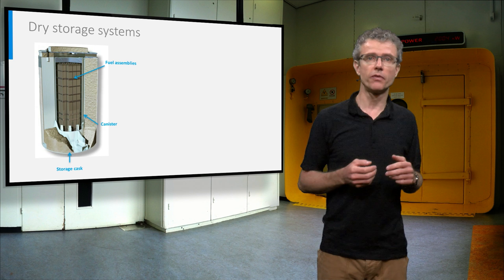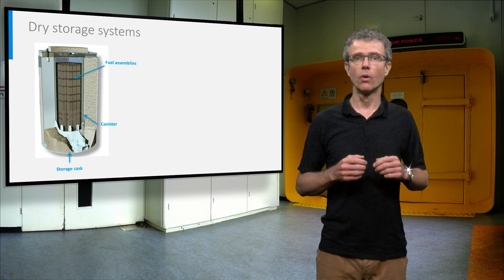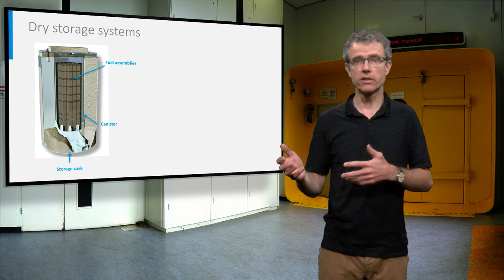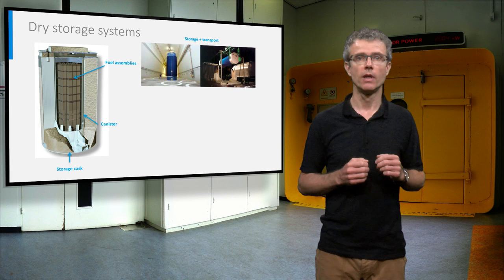Other countries put the spent nuclear fuel after sufficient wet cooling in dry storage containers. Whole spent nuclear fuel assemblies are placed in a welded or bolted canister under inert atmosphere. The canister is placed in a storage cask, or in a transportation cask, or in a dual-purpose cask, combining both purposes.